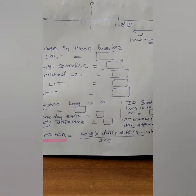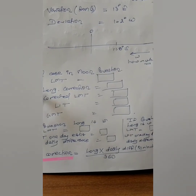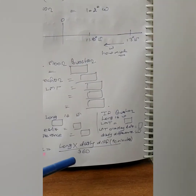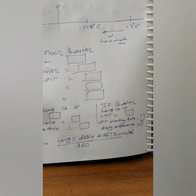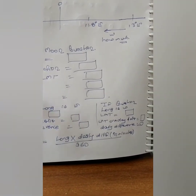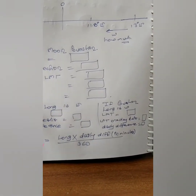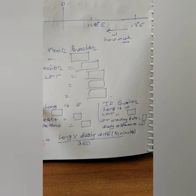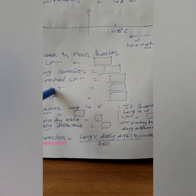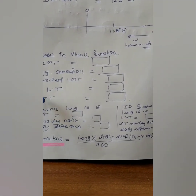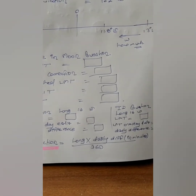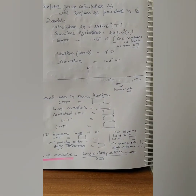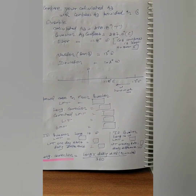Going back to the full process for the moon: write LMT moon rise/set, apply the longitude correction, then LIT, then LMT, then GMT. On the basis of that GMT, find the declination and d-correction, then use the formula cos(rising/setting azimuth) = sine(dec) upon cos(lat). The rest of the process remains the same as for the sun. Thank you very much for listening.